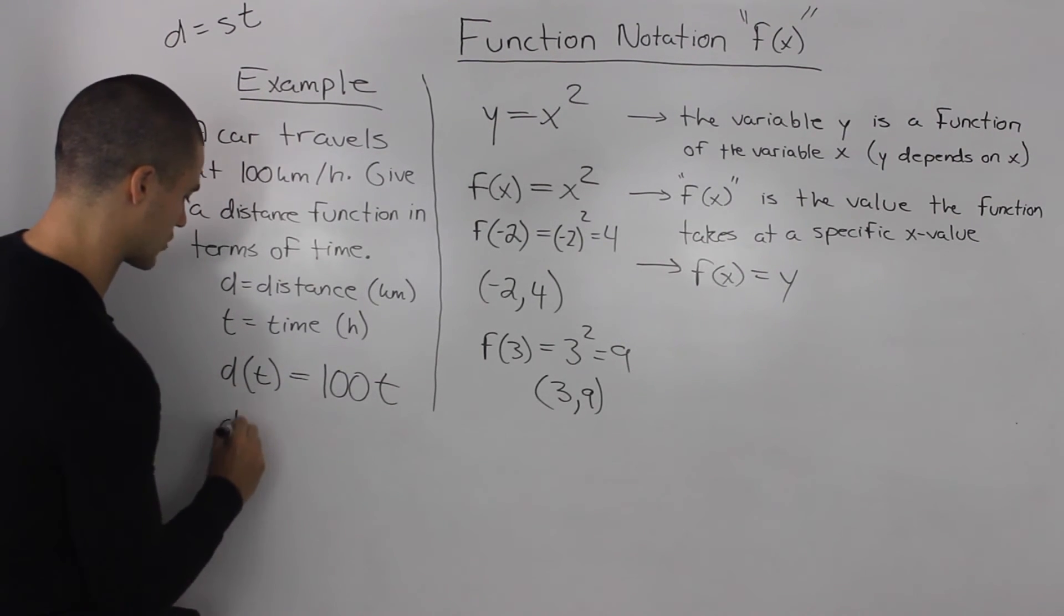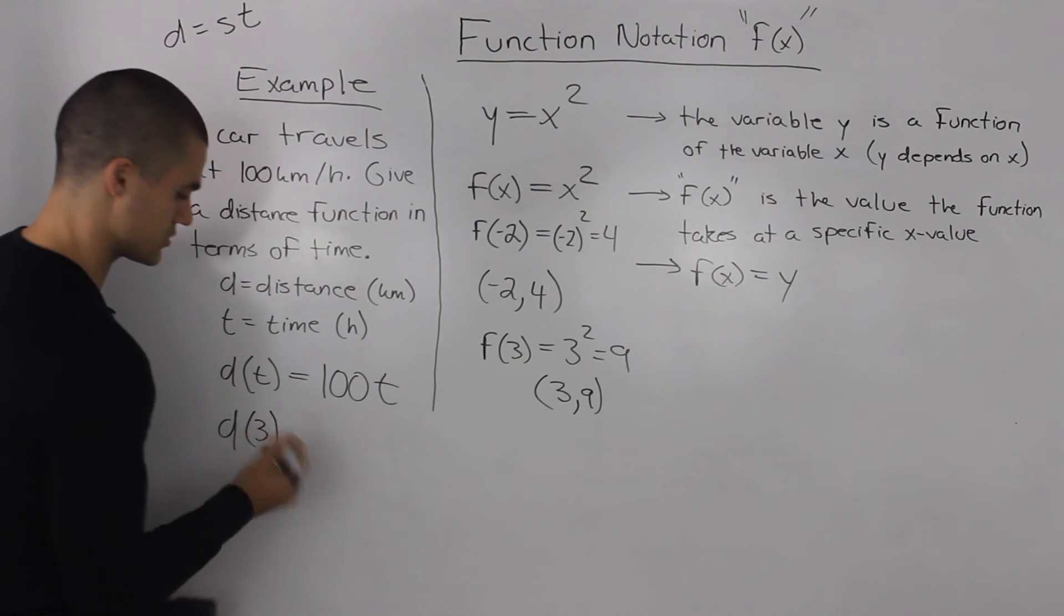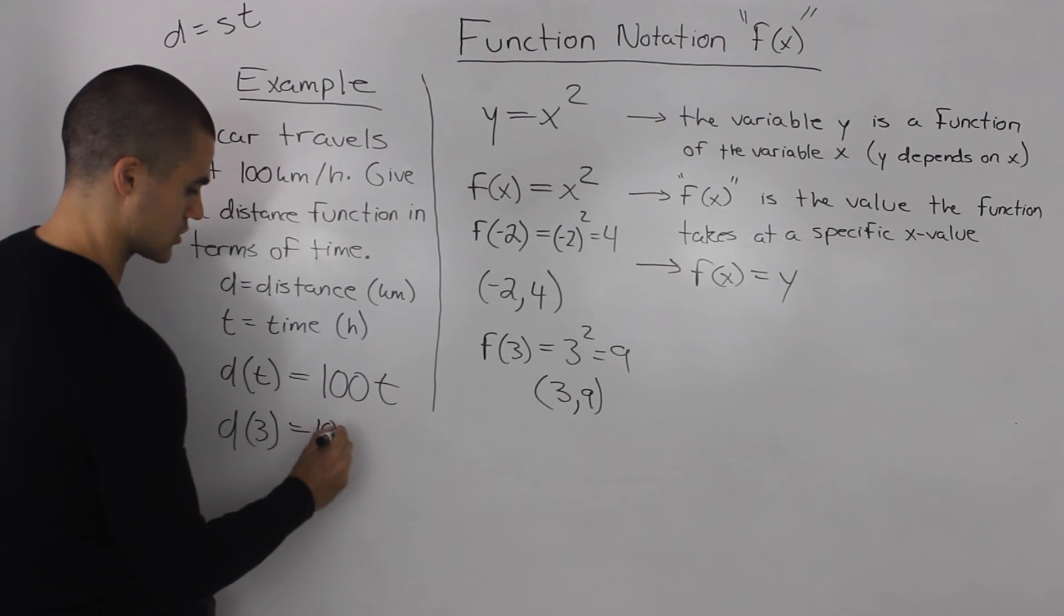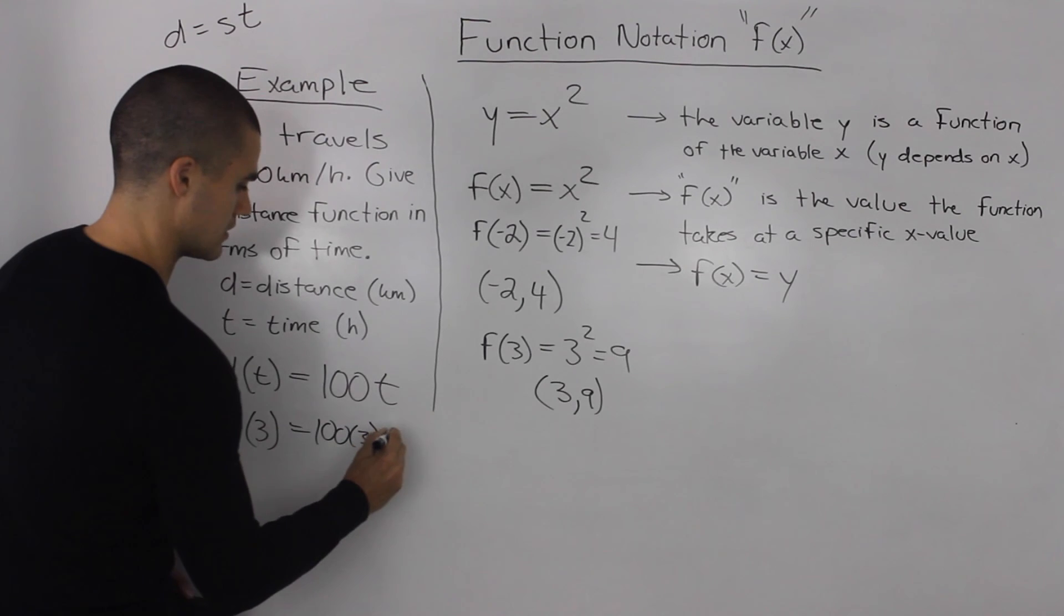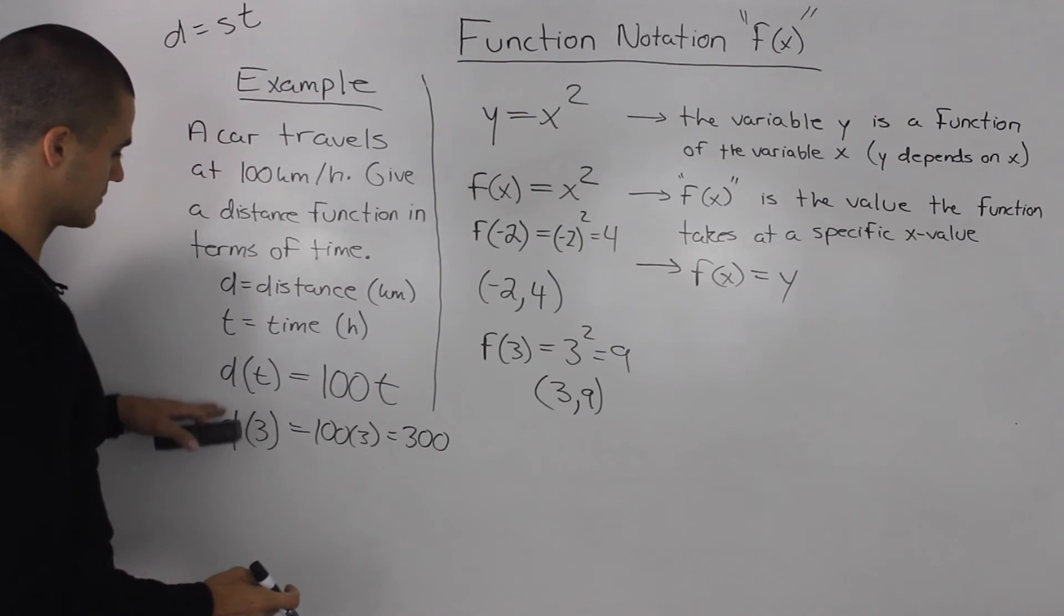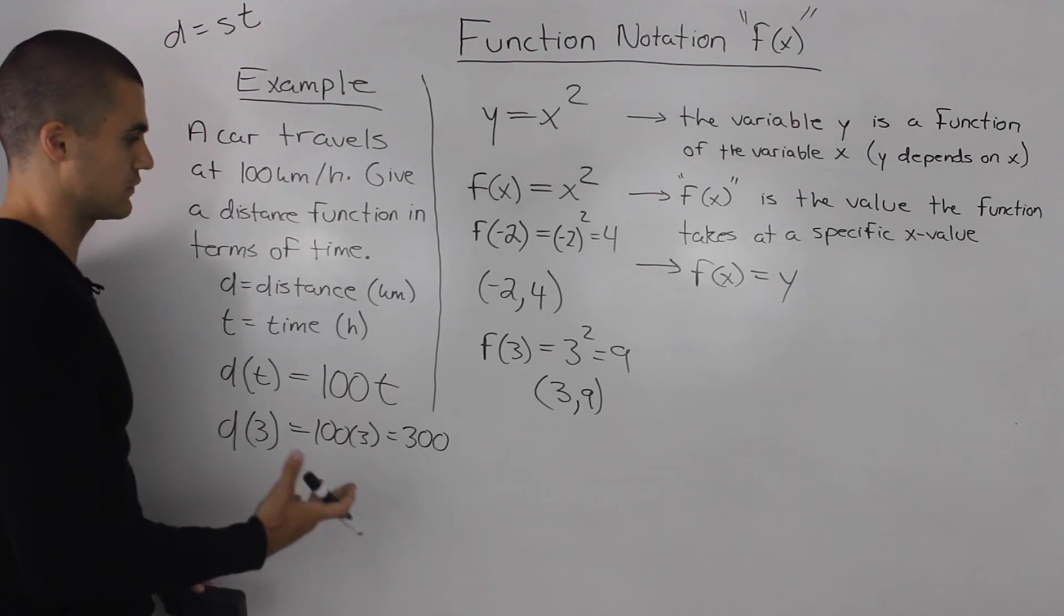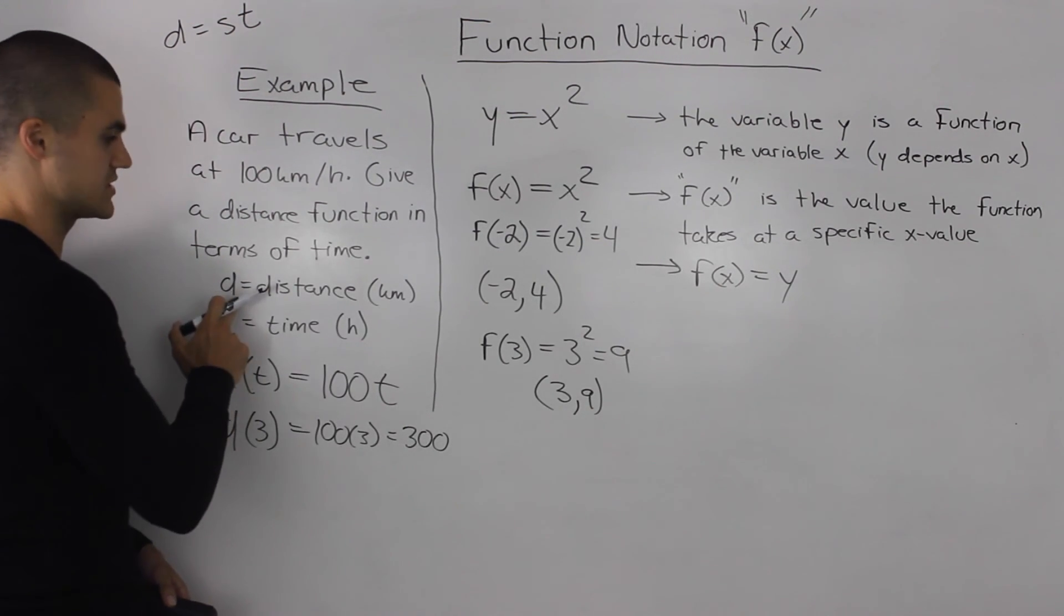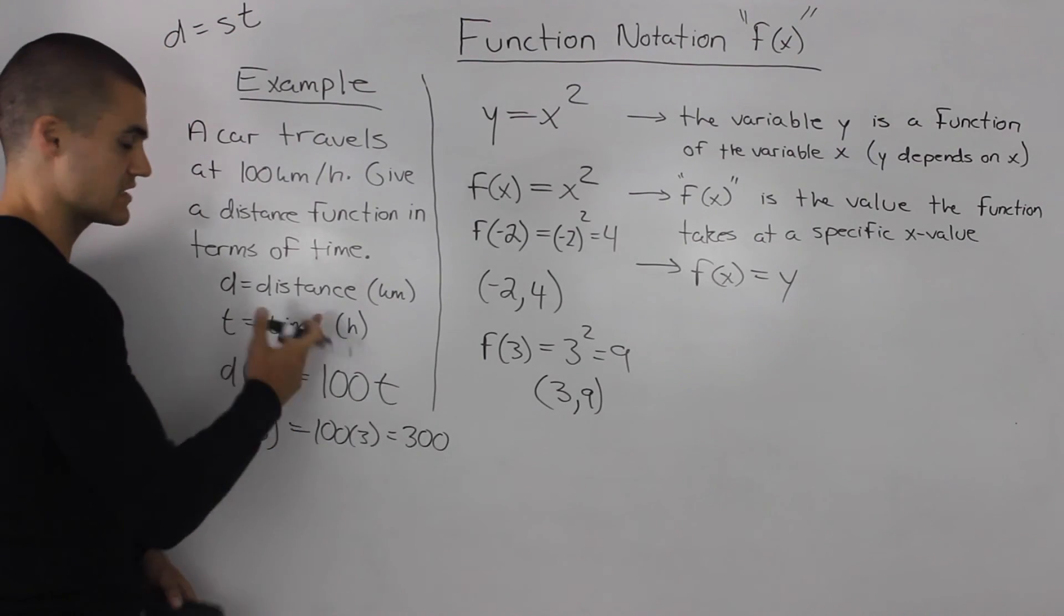So if we want to know the distance that the car travels after three hours, 100 times 3 equals 300 kilometers. So sometimes it's more appropriate to use a different letter. So in this case, we use d for distance and t for time.